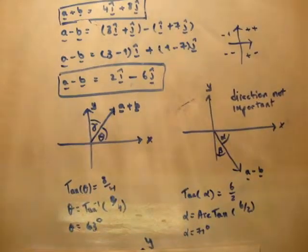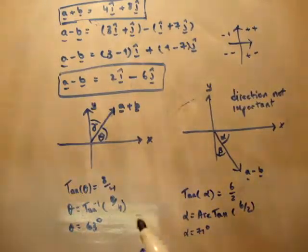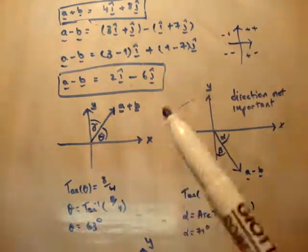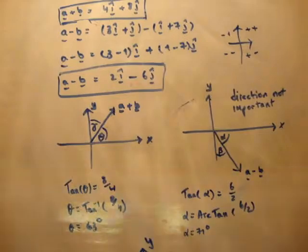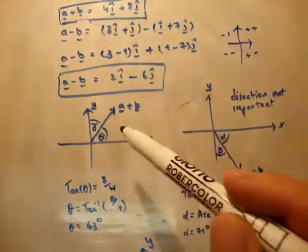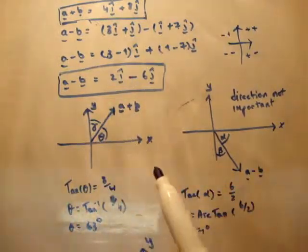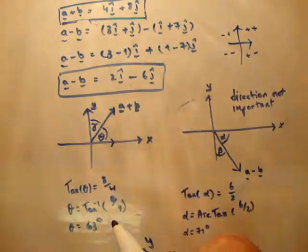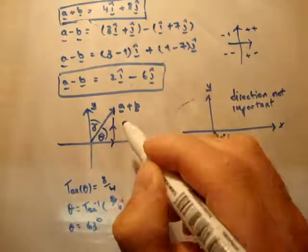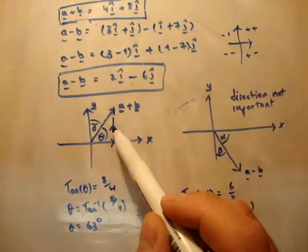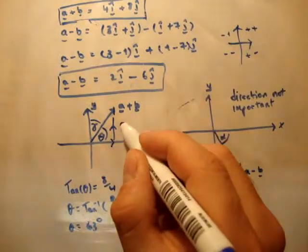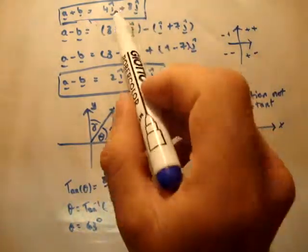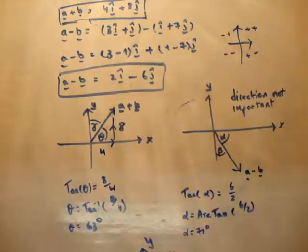To do that, we use normal SOHCAHTOA, and we know that tan is opposite over adjacent. Our vectors are a plus b equals 4i hat plus 8j hat. We know that a plus b is a resultant vector made up of two vectors in the unit vector directions. The magnitude of the vertical vector is 8 units, and the vector in the i hat direction equals 4 units.